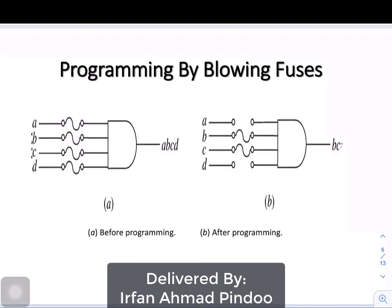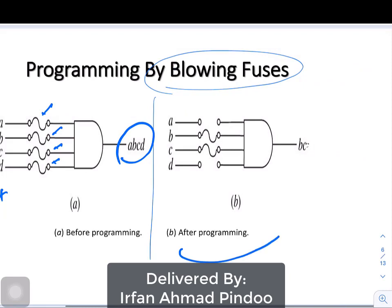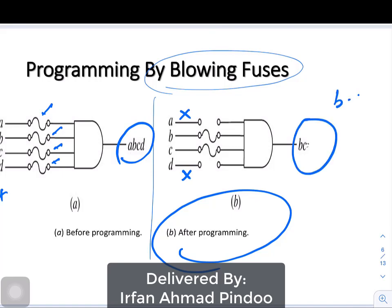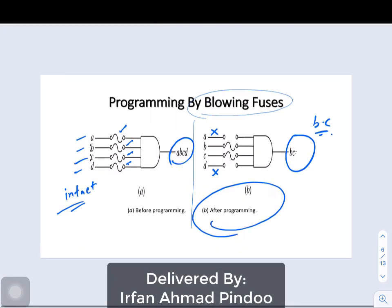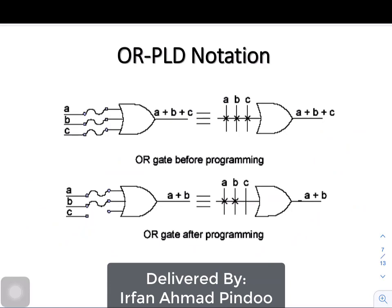Now, how do we program? As you can see here, all the switches are originally in contact — as I said in the introduction, originally all the contacts would be present. The input is A, B, C, and D and the output is A, B, C, D. Once you are programming, you can see that A is now disconnected and D is also disconnected, so the output is only B dot C. Originally all the connections are intact, and once you do programming you blow away some connections — this is the kind of programming we are doing.